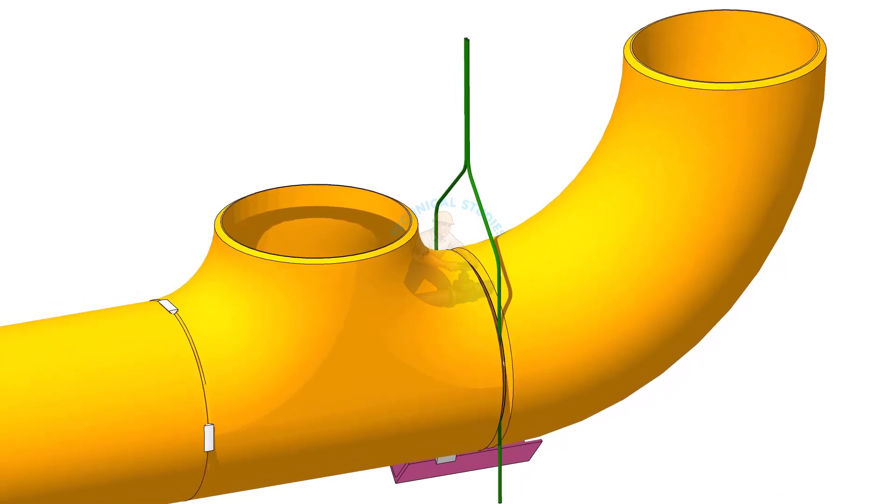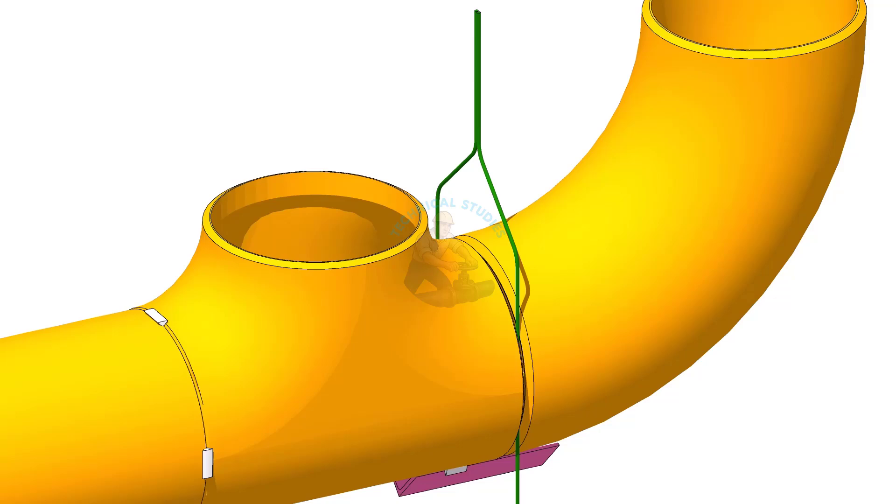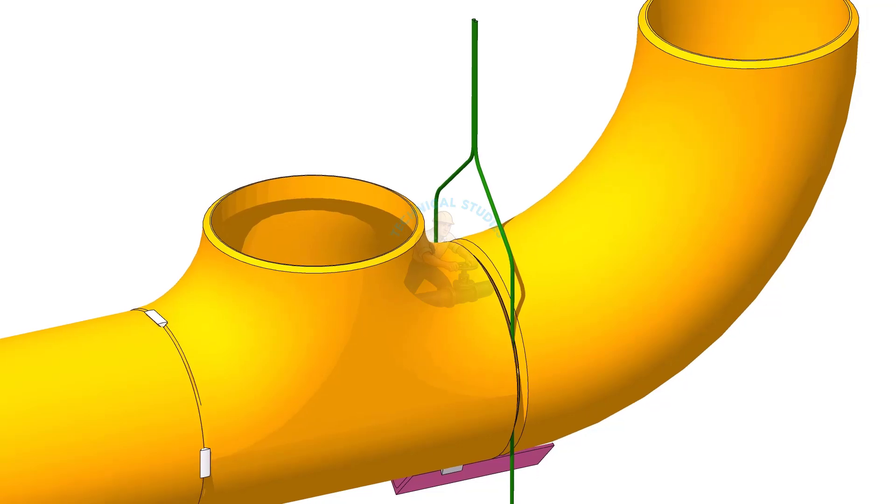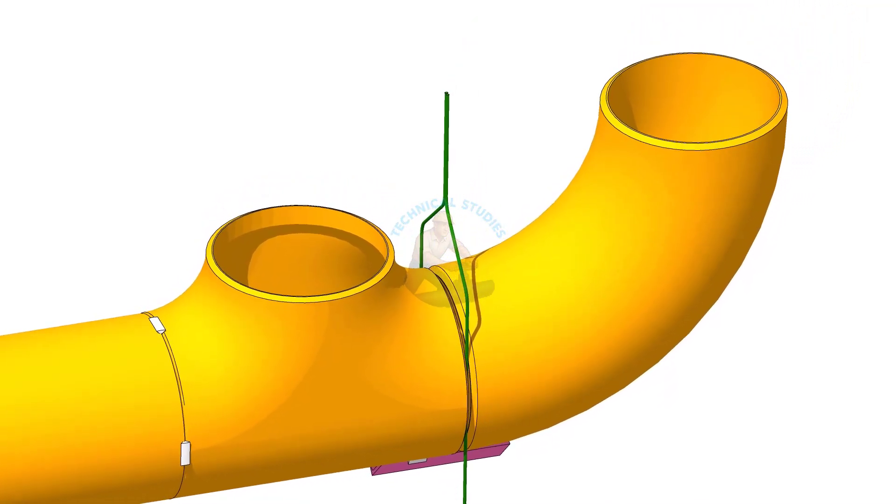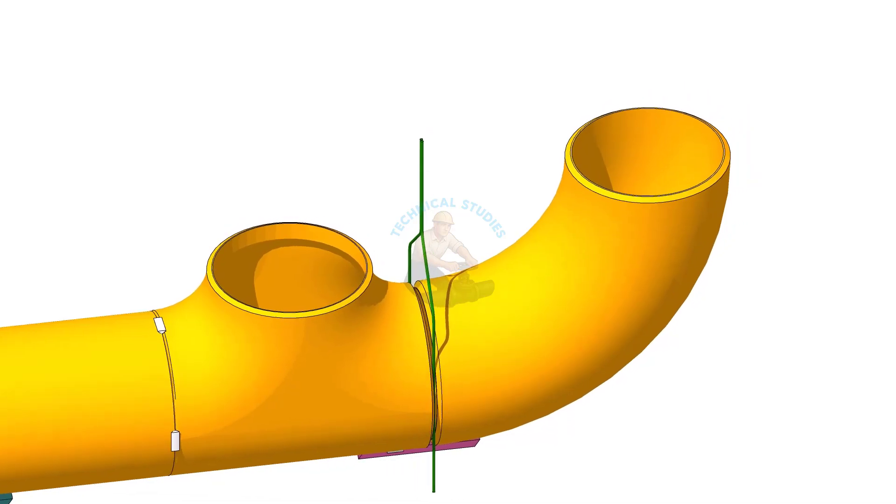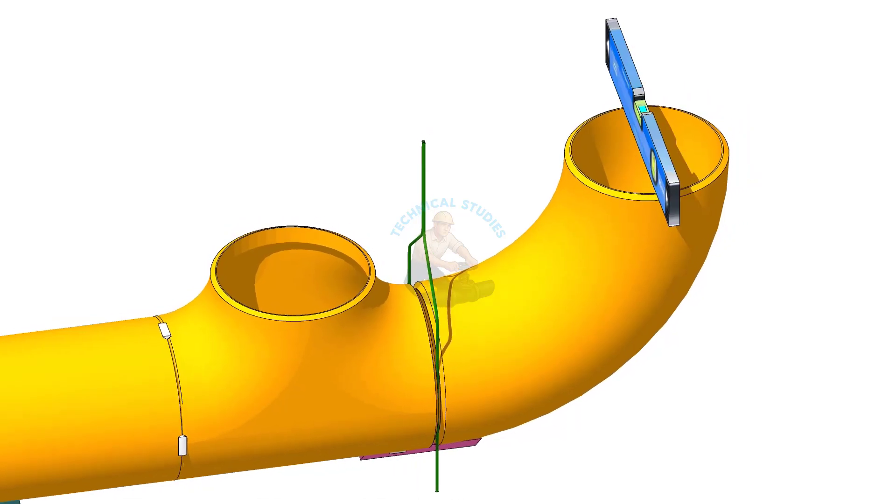Place the elbow on the angle cleat vertically. Insert the gap rod into the joint. Correct the level, as shown, in both directions.